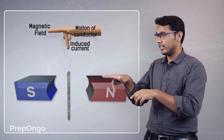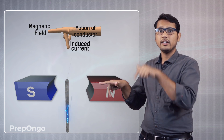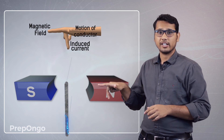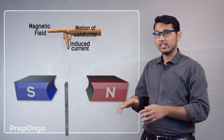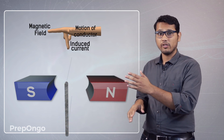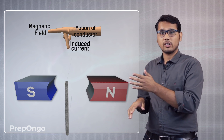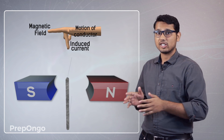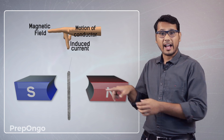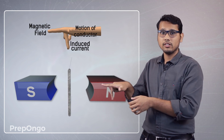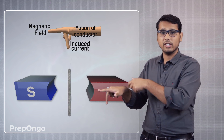You will find that the current in this conductor will flow in a downward direction. Now let us reverse the direction of the conductor and find out the direction of current again. The magnetic field is in the same direction, but the conductor is now moving inwards.